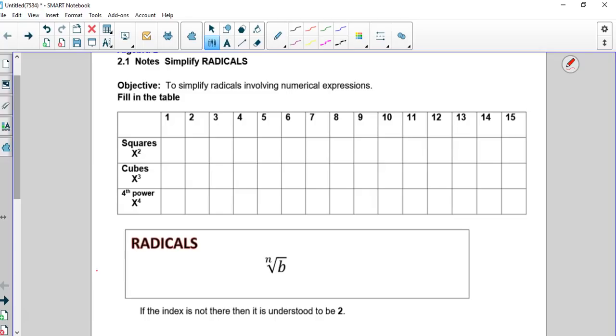To simplify, we're going to use these numbers to help us down the road. Our first row is our squared numbers: 1 squared is 1, 2 squared is 4, 3 squared is 9, then 16, 25, 36, 43, 49, 64, 81, 100, 121, 144, 169, 196, and 225.